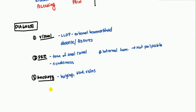There is usually no need for further investigations such as labs or imaging. In cases of chronic or very bloody hemorrhoids, a CBC to check for anemia may be done, but this is very rarely performed.